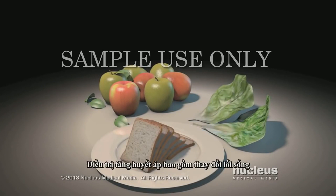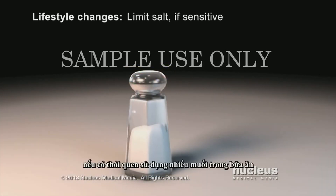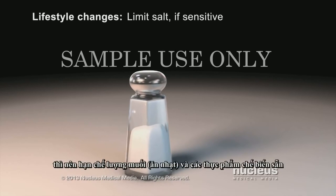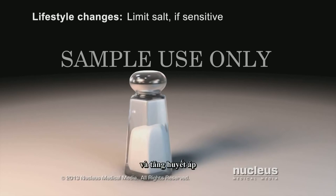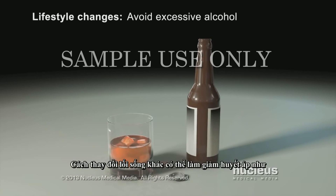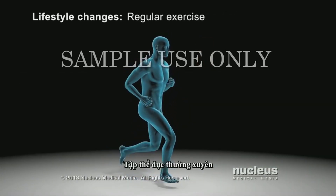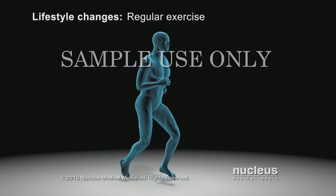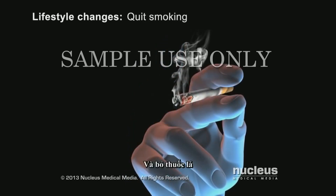Treatment for essential hypertension includes lifestyle changes such as eating a healthy diet. If you are sensitive to sodium, your doctor may recommend limiting your intake of salt and highly processed foods, as sodium may cause your body to retain water, increasing both blood volume and blood pressure. Other lifestyle changes include avoiding excessive alcohol intake, getting regular exercise, losing weight if you are overweight, and quitting smoking.